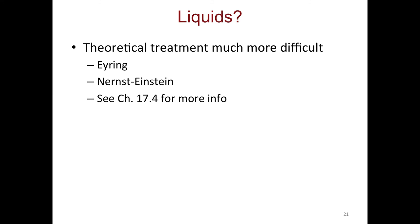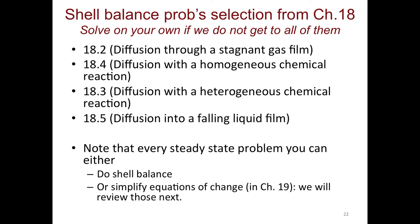For liquids, there are different theoretical treatments — one is Eyring, one is Nernst-Einstein. If you want to learn more, you can look at chapter 17.4 in BSL. Ultimately, no theory works really well for liquids because they have very complex intermolecular forces, making it extremely hard to account for diffusion. So we will move on to equations of change and shell balances to help us solve problems.